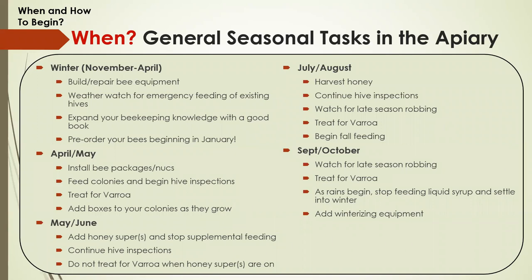When it comes to general seasonal tasks in the apiary — and by general I really mean general — this is basically what you do year after year. The timeframe will shift depending on the weather, your colony, and a couple different factors. Winter is what we're going through right now. This is when, if you have existing colonies, you prepare and build any new equipment you need. Weather-watch: if you see a day with temperatures of 55 degrees or above and it's not too windy or rainy, you can get out and do some emergency feeding. This is also the time to preorder your bees — we typically start preorders the first week of January.